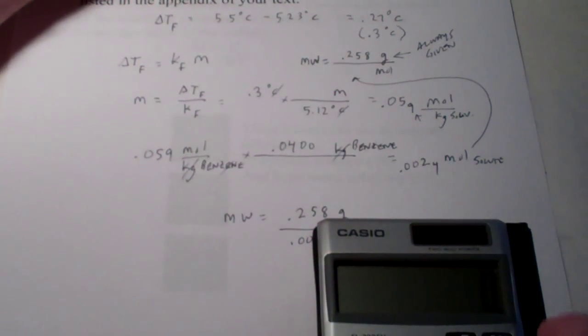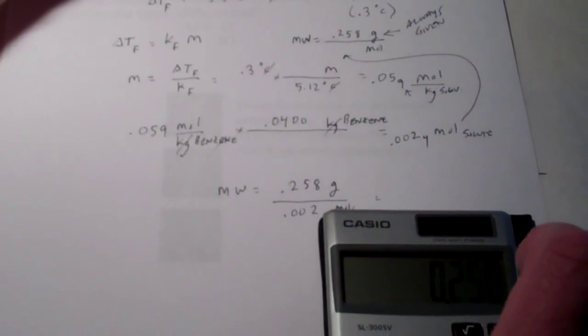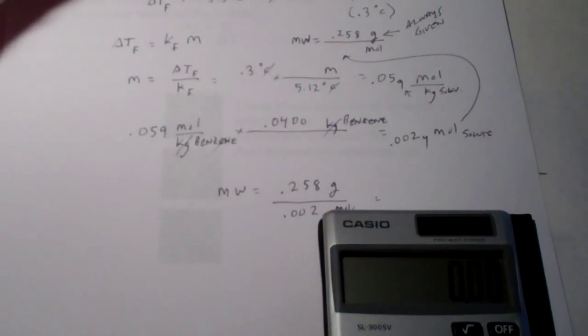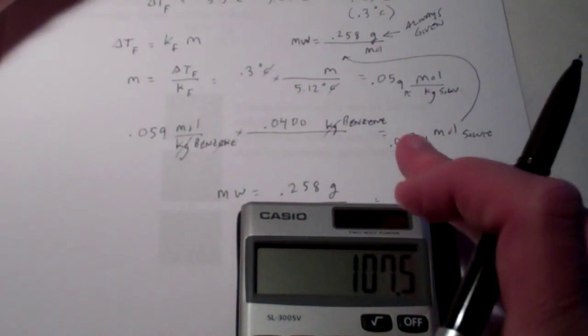So, let's see what we get. 0.258 divided by 0.0024 moles. Looks like my molecular weight says 107.5.